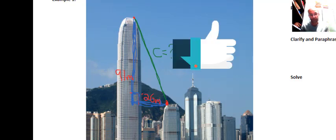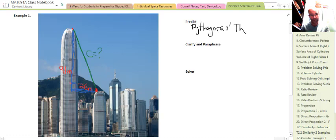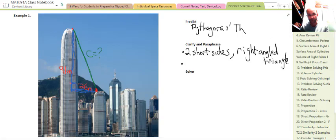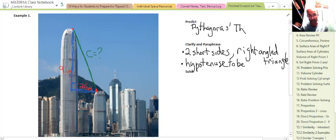We can predict it's a right angle triangle, so we're going to use Pythagoras's theorem. We've got two known sides. Let's clarify what we've been given: two short sides, and a right angle triangle. What is it that we have to find? We have to find the hypotenuse. So we know what we need to do now. In the solve, we have to find the hypotenuse, so we'll use Pythagoras's theorem.